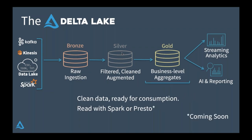And finally, we move on to the gold class of data. This is clean data, ready for consumption — business-level aggregates that talk about how things are running. Here you start using a variety of different engines. Delta Lake already works very well with Spark, and there's a lot of interest in adding support for Presto and others. You can do streaming analytics, AI, and reporting on it as well.